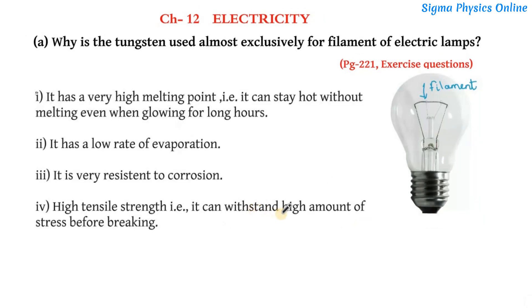Some of the reasons why tungsten is exclusively used for filaments of electric lamps are: First, it has a very high melting point. The melting point of tungsten is almost 3400 degrees Celsius.